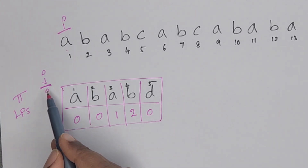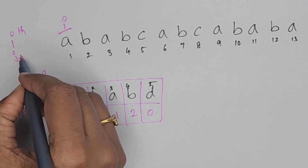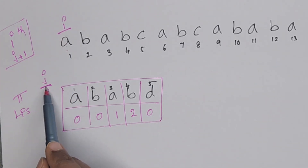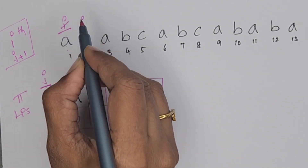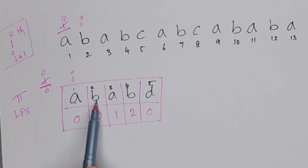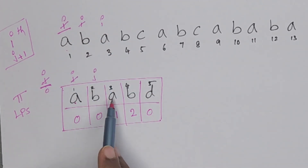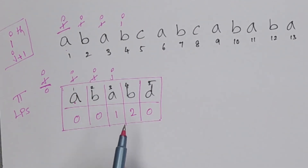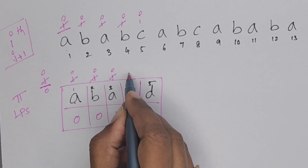What we have to compare: the I-th character and the J+1 character. I-th character is A, J+1 character is also A — both matching, so increment I and increment J. Again, I-th character B, J+1 is also B — increment I, increment J. I-th character A, J+1 is also A — increment I, increment J. I-th character B, J+1 is also B — increment I, increment J.